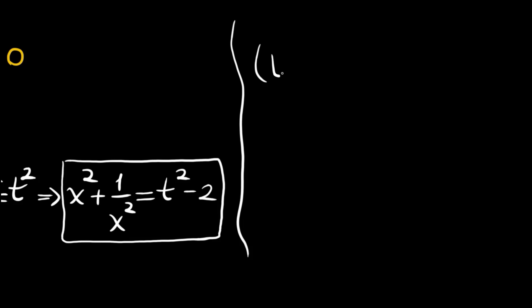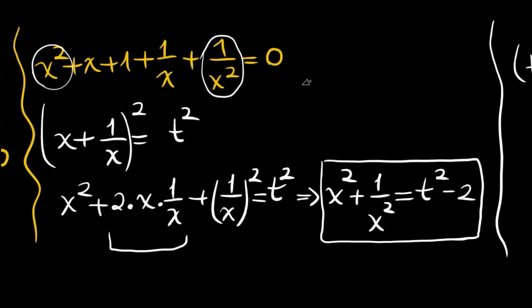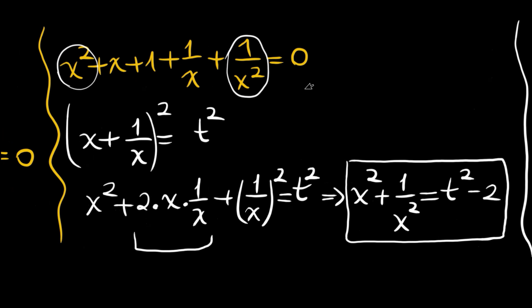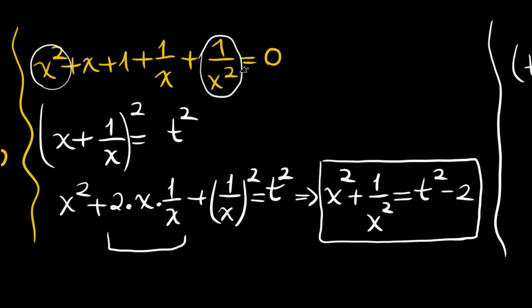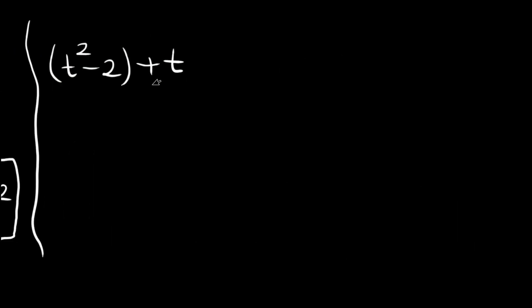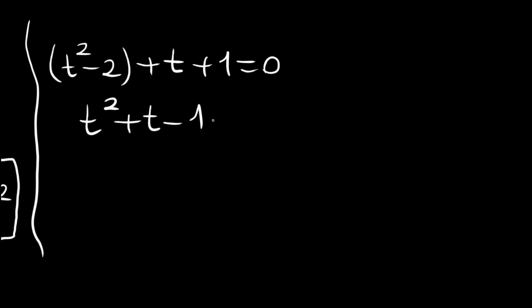Substituting into our equation: we replace x squared plus 1 over x squared with t squared minus 2, and x plus 1 over x with t. The equation becomes t squared minus 2 plus t plus 1 equals 0, which simplifies to t squared plus t minus 1 equals 0.